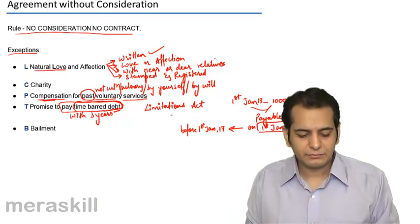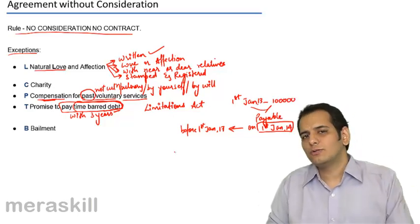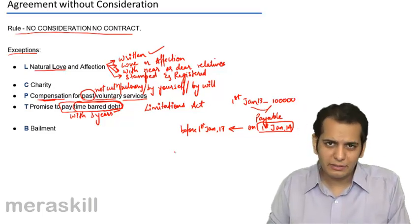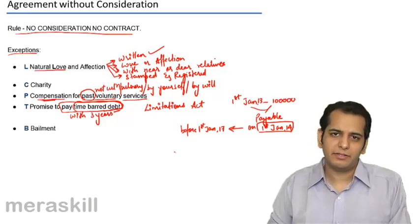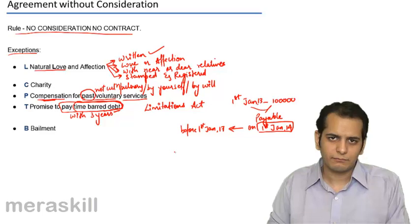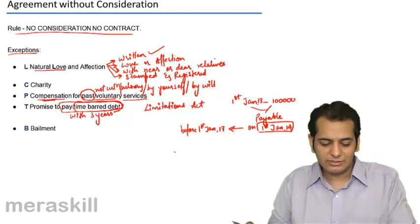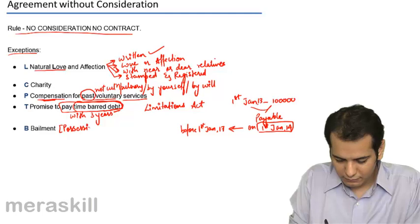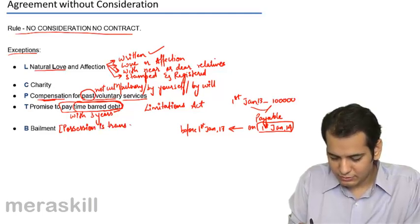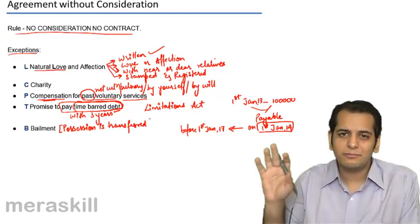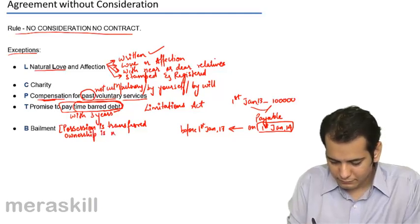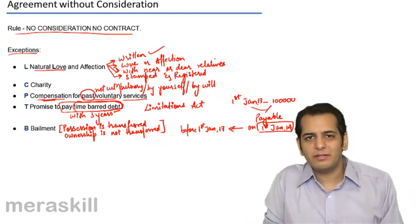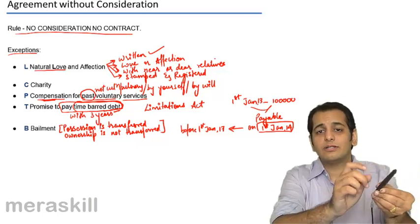The next topic is Bailment. Bailment is also a type of contract. However, we will not go into the detail of Bailment as you have it for your next level. But it's important for us to understand what Bailment is. Bailment is a contract wherein only the possession of the goods is transferred. The ownership is not transferred.